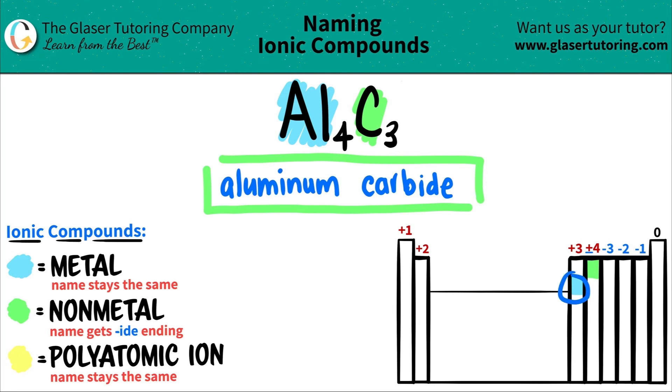Well, even though aluminum is a post-transitional metal, it only has one charge. It's always going to be +3. Since we don't have to name different charges, aluminum never needs a Roman numeral. So this is just aluminum carbide.